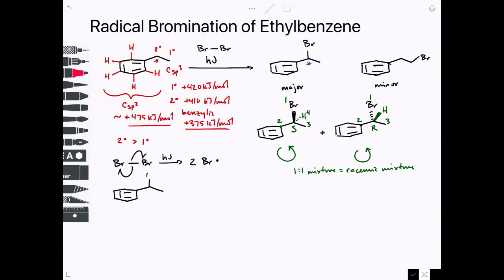We said it was going to be at this secondary carbon, which is benzylic. The bromine radical, we're going to draw a fishhook arrow. We'll homolytically cleave that bond. So now we have a secondary benzylic radical.